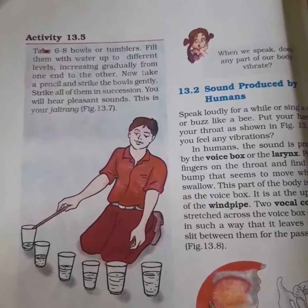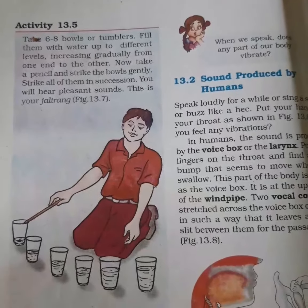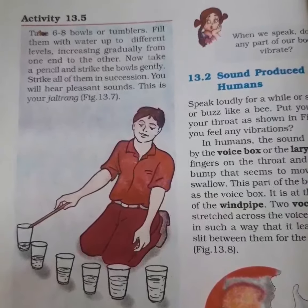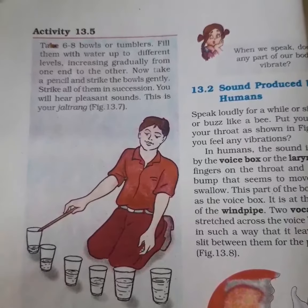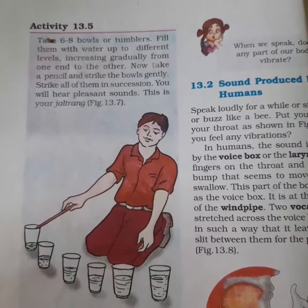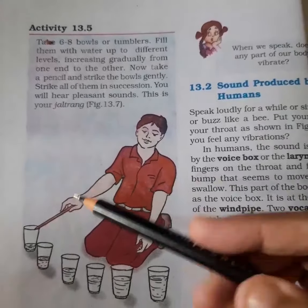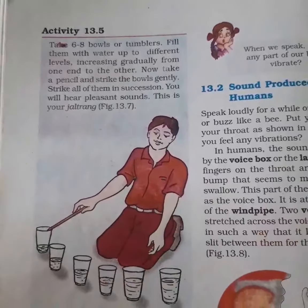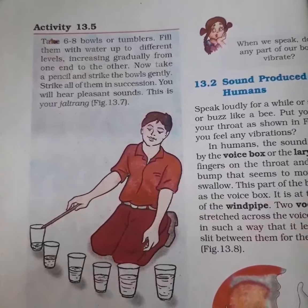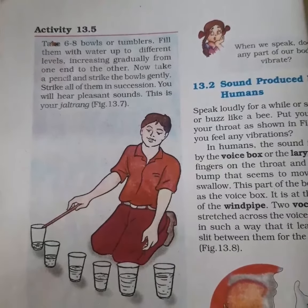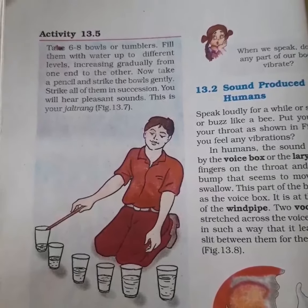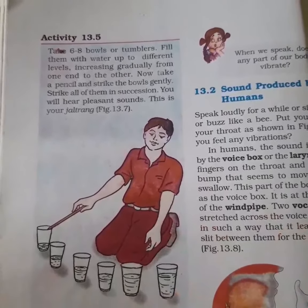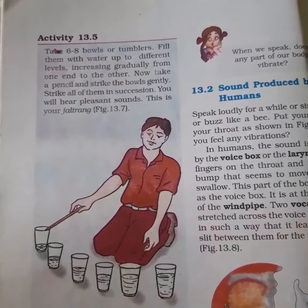Activity 13.5 is on page number 160 of your NCERT book. See the figure — take six to eight bowls or tumblers and fill them with water up to different levels. There are glass tumblers filled with water, and the water levels are different in each, increasing gradually from one end to the other.